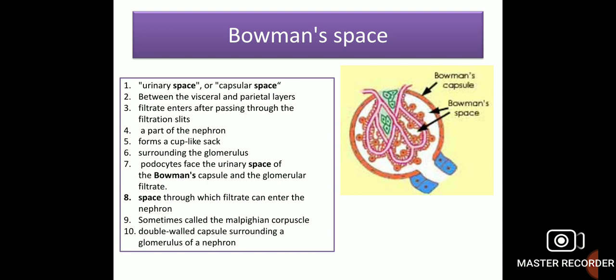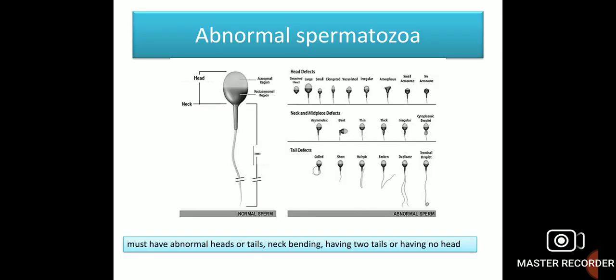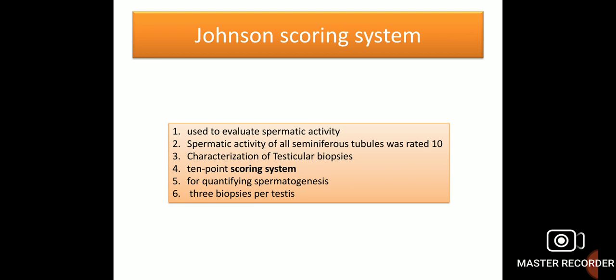What are abnormal spermatozoa? If the spermatozoa have abnormal heads or tails, neck bending, two tails, or no head, they will be categorized as abnormal spermatozoa.